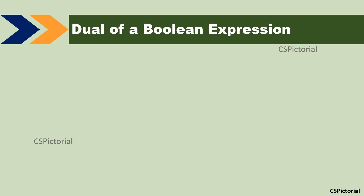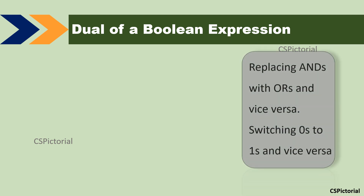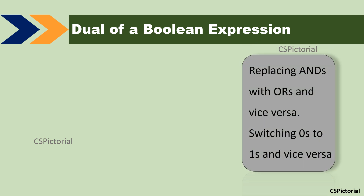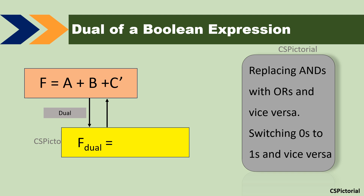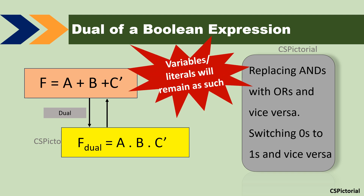Dual of a Boolean expression. The dual of a Boolean function is derived by replacing ANDs with ORs and vice versa, and switching identity elements — zeros to ones and vice versa. Always remember, for duality, the variables or literals will remain as such. You should never change the variables to find the dual of a Boolean function. This is the major difference between the complement and dual of a Boolean function.